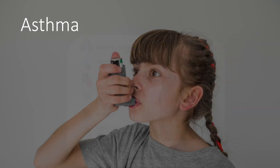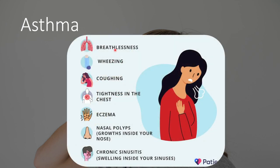Symptoms include breathlessness, wheezing, and coughing. The wheeze comes from increased mucus. Breathlessness comes from the decreased lumen volume, meaning less air reaches the terminal bronchioles. Coughing is due to irritation from inflammation and excess mucus. Chest tightness may also be experienced as a culmination of all these symptoms.